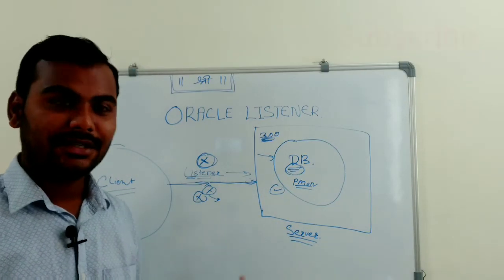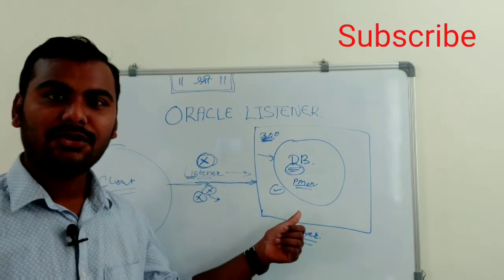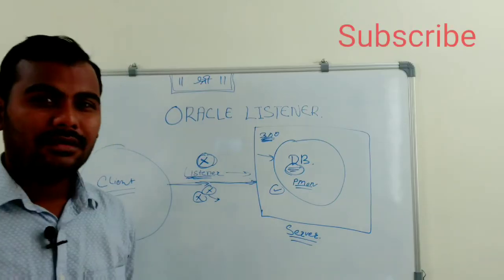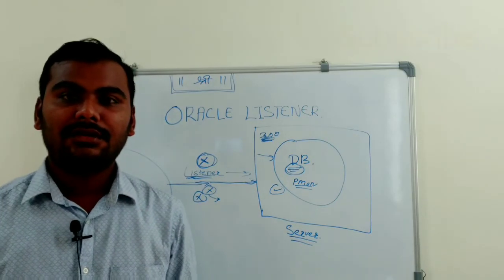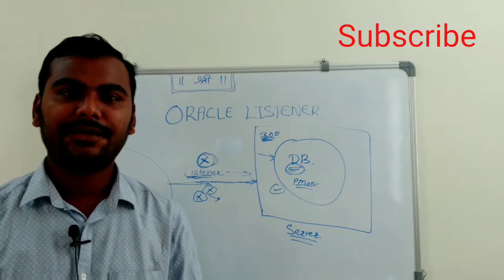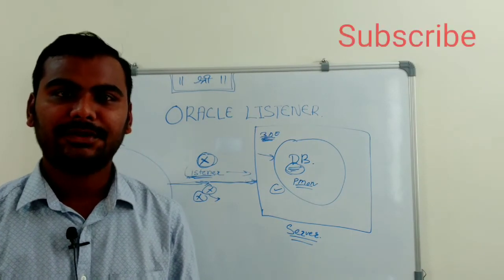I mean to say, if your listener is down, your database will not go down state. You can stop the listener. So this is all about listener and the database services. I hope this is pretty much clear. If you have any queries, you can write back to me.